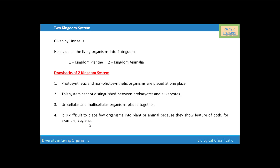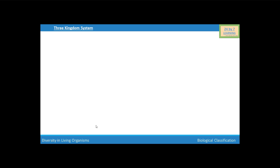It is difficult to place few organisms into plant or animal because they show features of both. For example, Euglena — it shows some features of plant and some features of animal. So whether we place Euglena in this system? Next, we are going to discuss the three kingdom system.